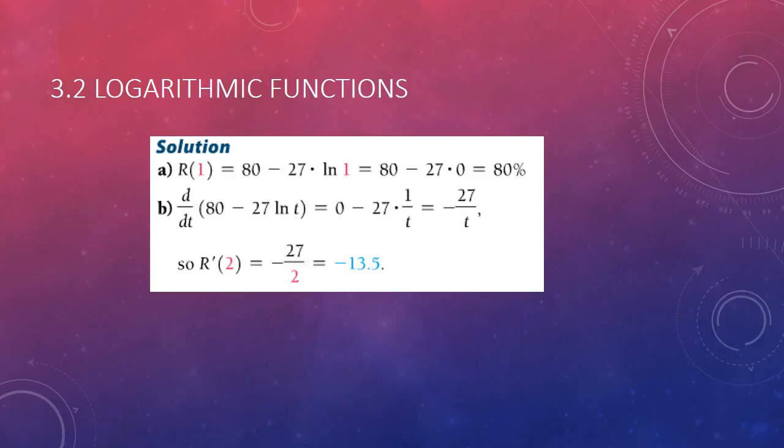Okay, so just r of 1, put in 1, and you get 80, so 80%. And then we're going to put in, we're going to do the derivative. The derivative of 80 minus 27 natural log of t is 0 minus 27 times 1 over t, or negative 27 over t. Putting in 2, we get negative 13.5.